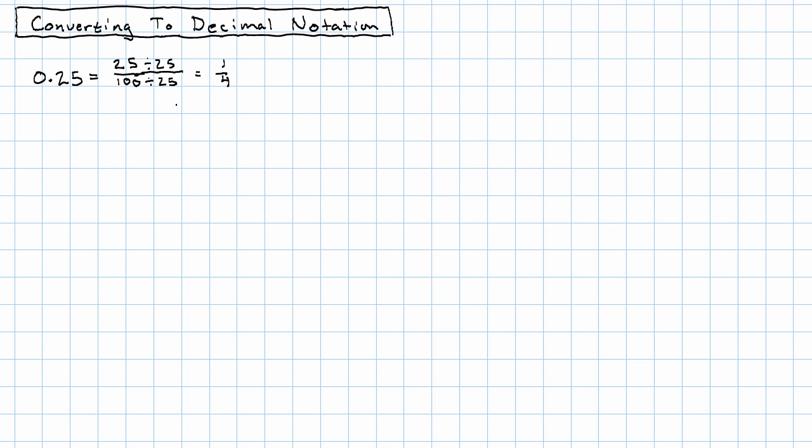So, to convert from a decimal to a fraction, just use the decimal fraction. To convert a fraction to a decimal, the simplest way is to just understand the fraction as division.